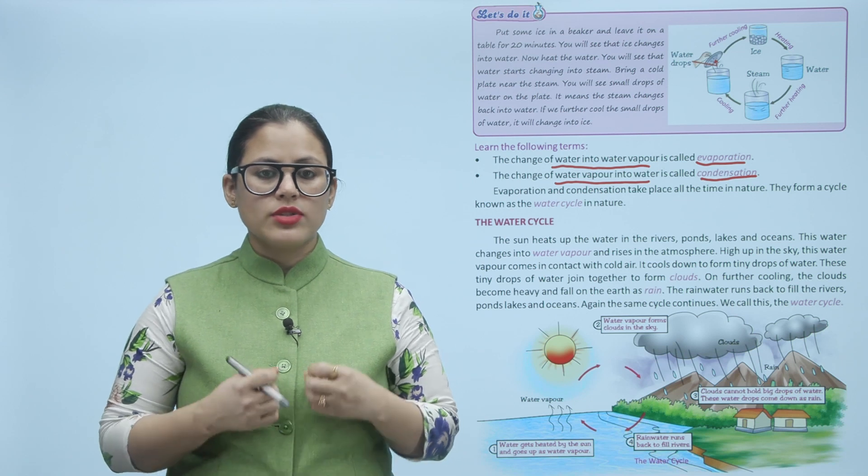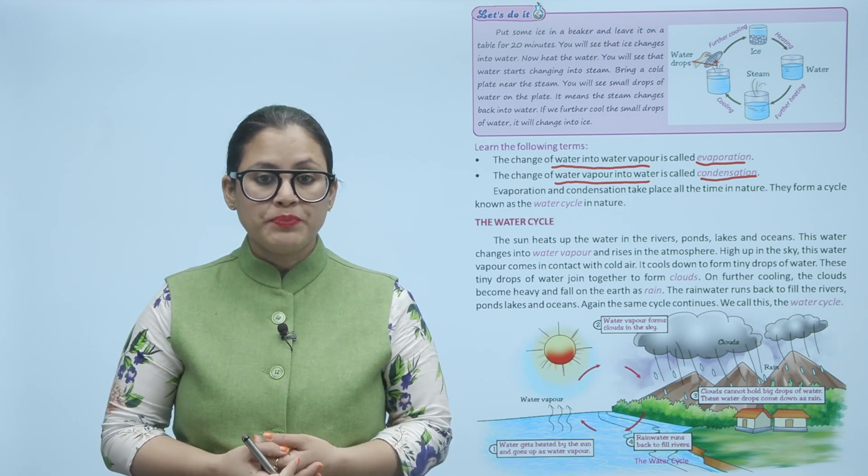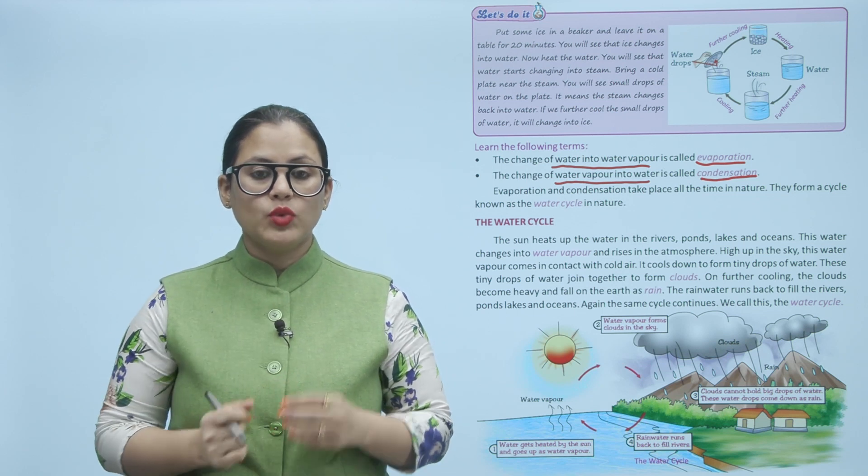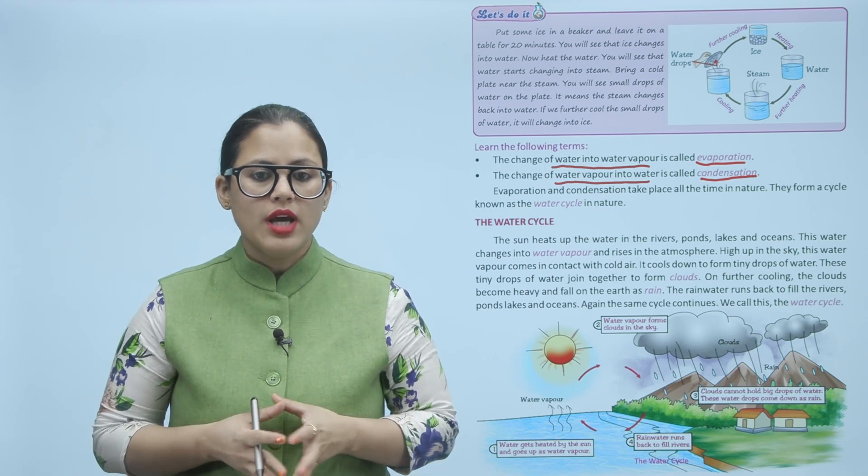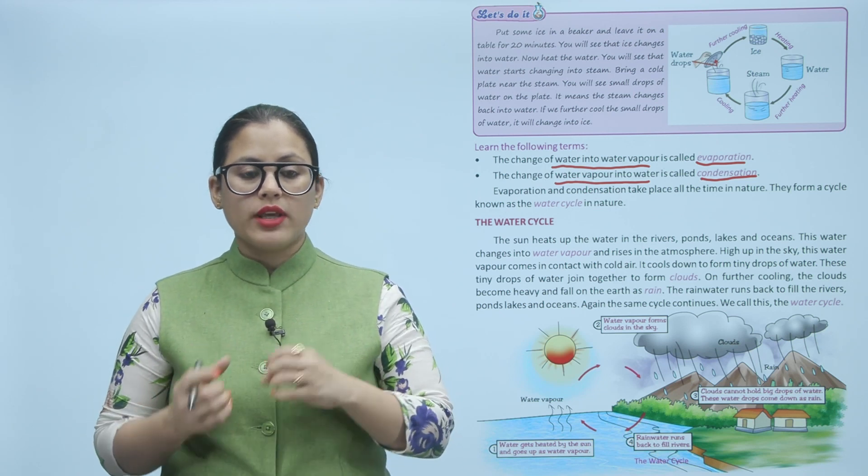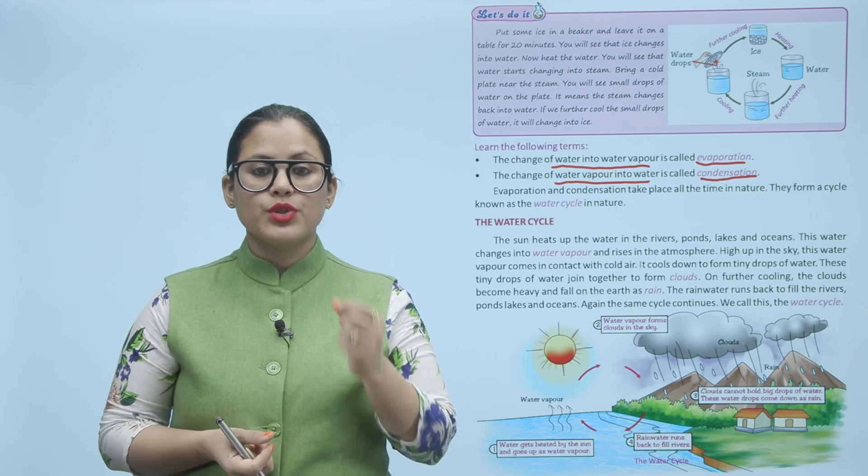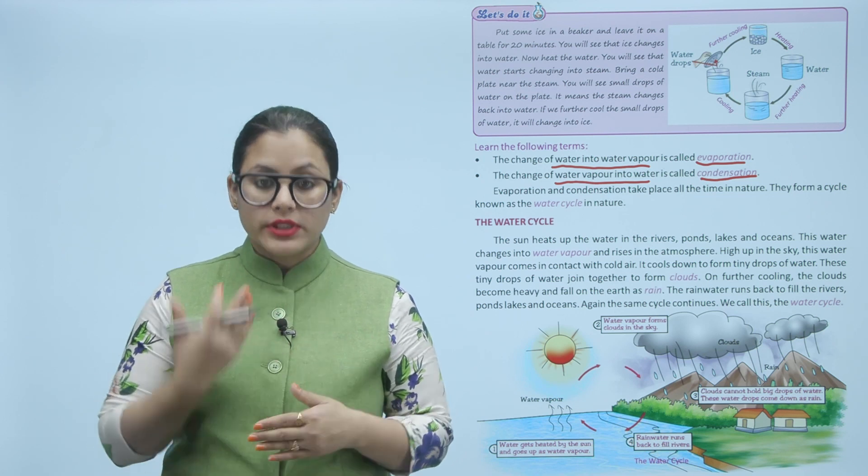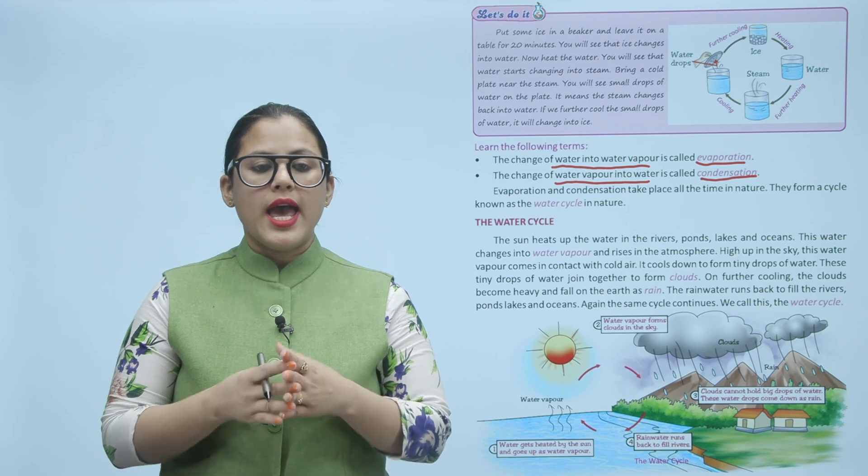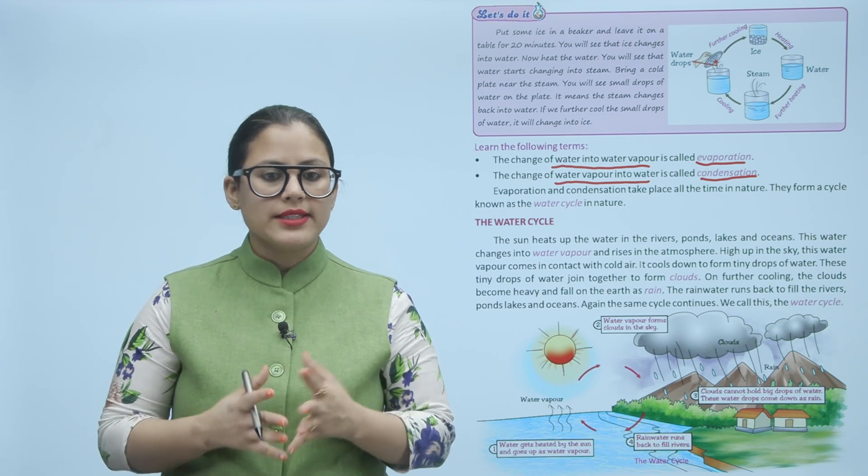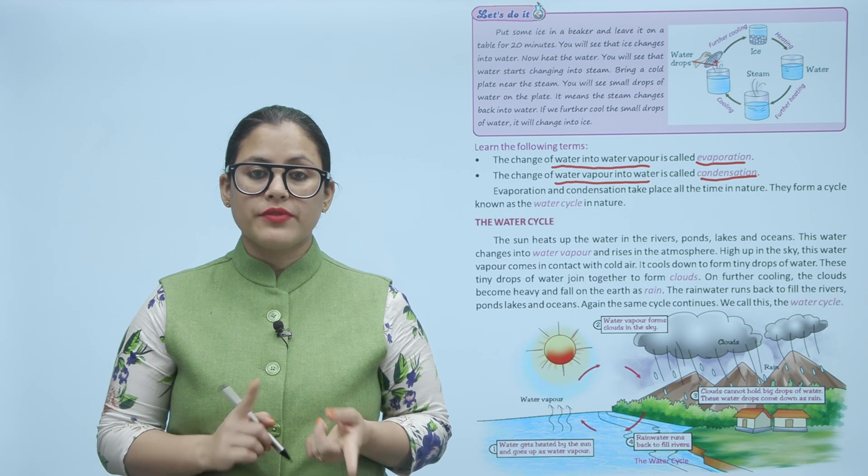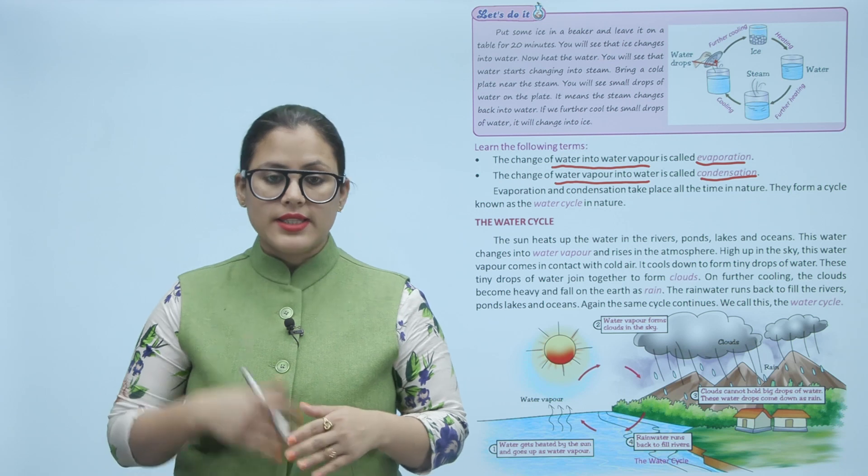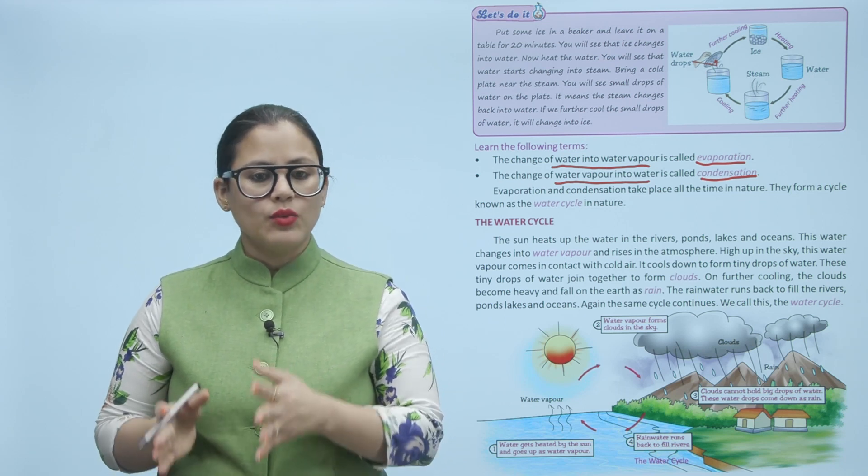What happens in the water cycle? The sun's heat causes the water bodies to heat up. Water vapor rises up in the atmosphere. In the sky, because the air is very cold, the water vapor comes into cold air and cools down. Then there are small drops of water. These tiny drops of water are joined together as clouds. When it cools down further, the clouds become heavy and then fall on the earth as rain. The rain water goes back to rivers, ponds, lakes and oceans. Again, the same cycle continues. We call this water cycle.